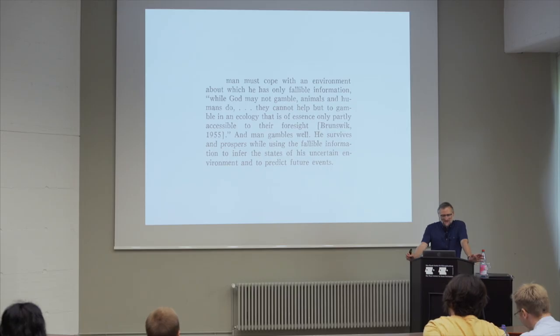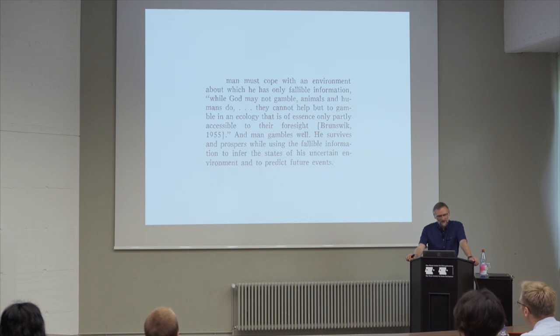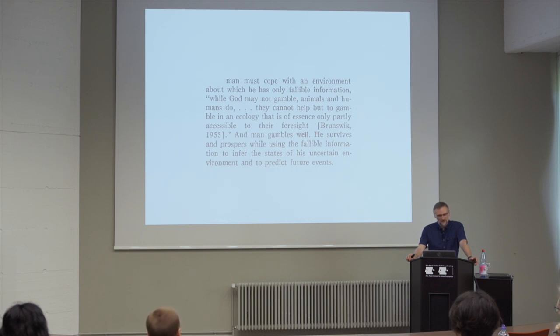The authors say — and from this you can already tell it's a pretty old paper — 'Man must cope with an environment about which he has only fallible information. While God may not gamble, animals and humans do; they cannot help but gamble in an ecology that is only partially accessible to their foresight.' — Brunswick, 1955. 'And man gambles well. He survives and prospers while using the fallible information to infer the states of his uncertain environment and to predict future events.' Now there are three different people talking here.